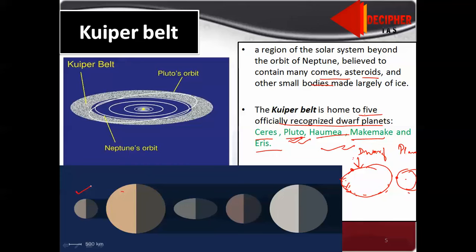These five dwarf planets. First one is Ceres. Second one is Pluto. Third one is Haumea. See the shape here. Fourth one is Makemake. And fifth one is Eris. You should remember these five main dwarf planets. You are able to see this is the Neptune's orbit, and outside that we have Kuiper belt.